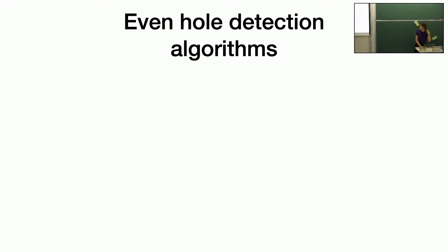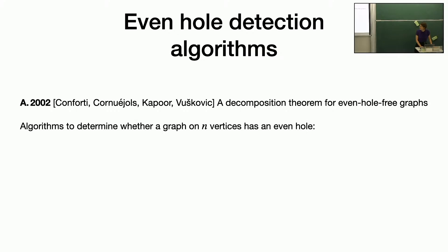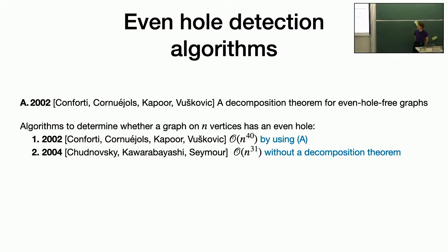I'll get a bit into the history for the even holes detection algorithms because there's been a bunch of them. It started with this structural decomposition theorem, and they obtained an algorithm using that — but no one has actually gone through and calculated the exact running time since there've been much faster algorithms. A couple years later, Maria Chudnovsky, Ken-ichi Kawarabayashi, and Paul Seymour got a slightly faster algorithm, using an entirely different approach — they didn't use a structural decomposition theorem for even-hole-free graphs; instead they dealt with the graph more directly.